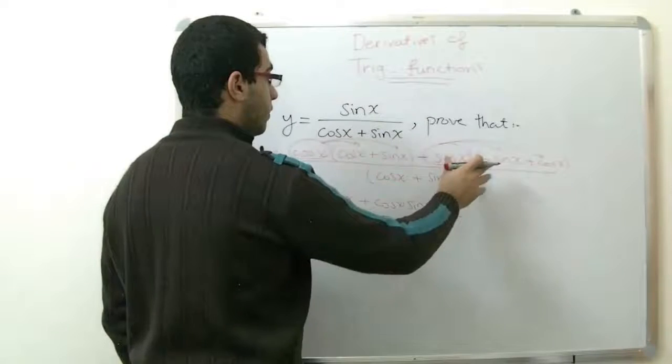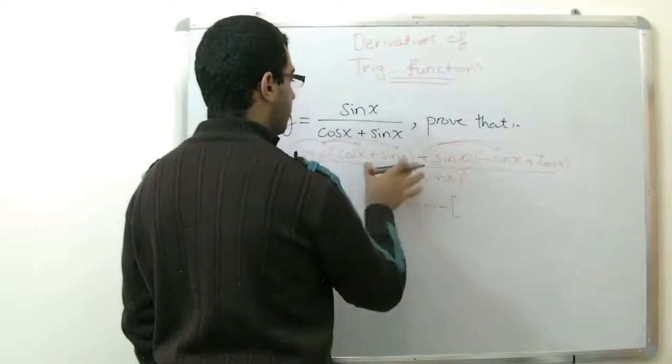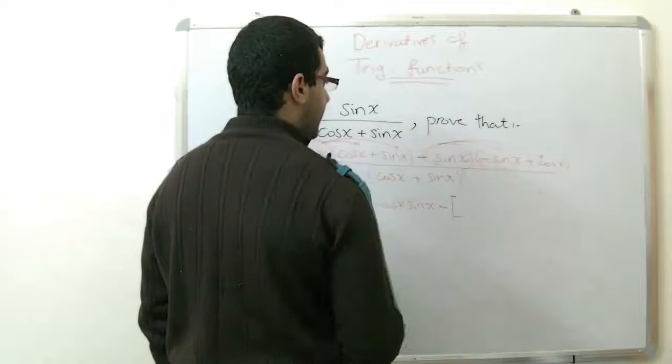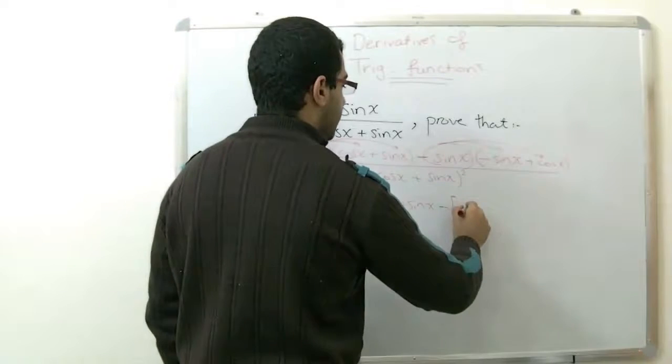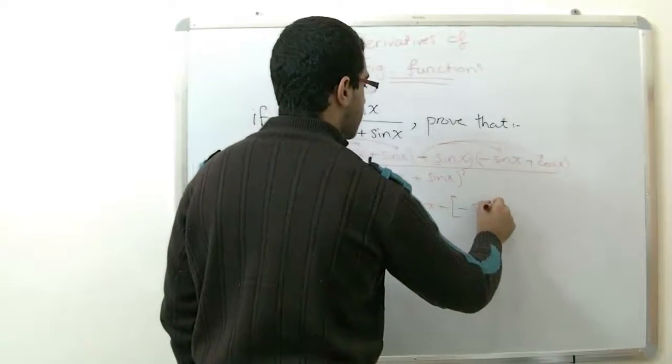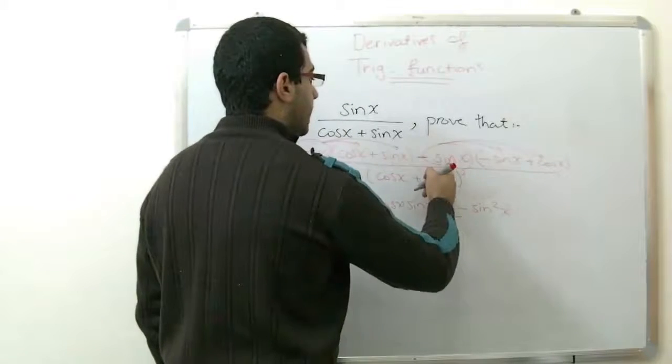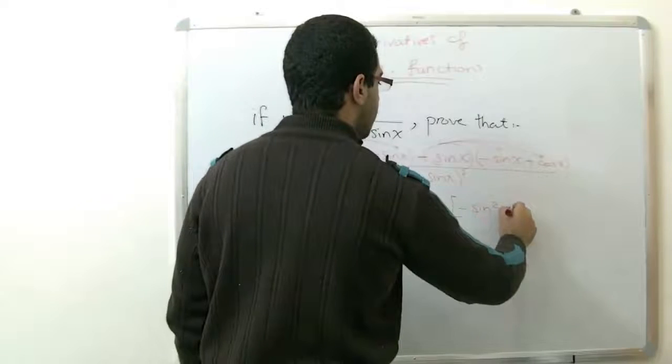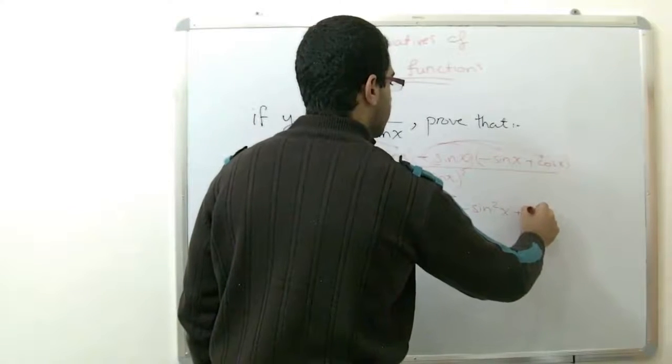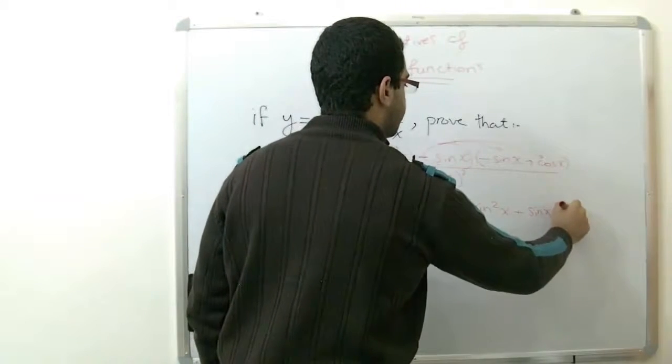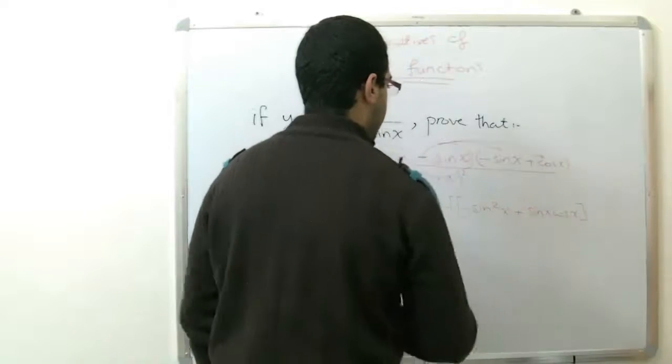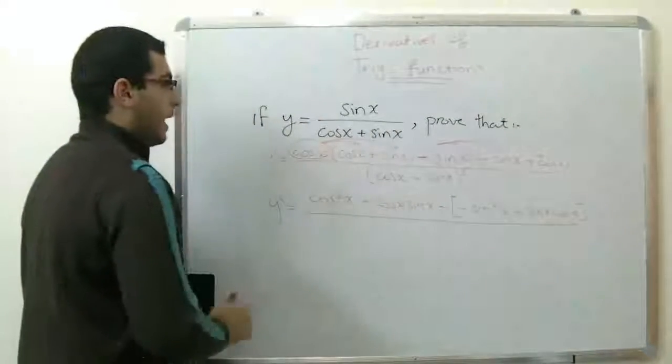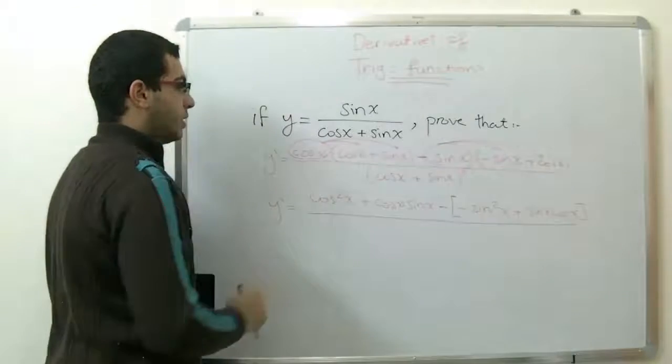And we put here a bracket to differentiate between this part and the other part. So sine x multiplied by negative sine x gives negative sine squared x. Sine x multiplied by cosine x gives us sine x cosine x. We close our bracket, put the division sign.